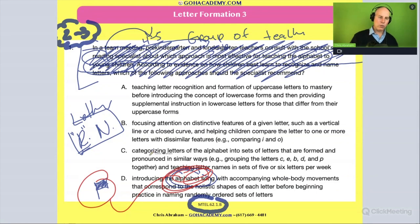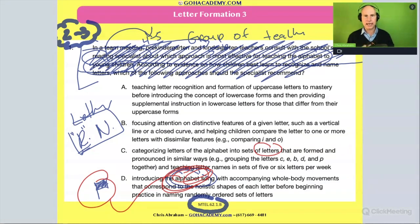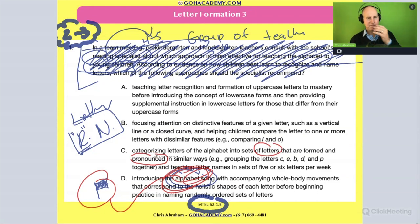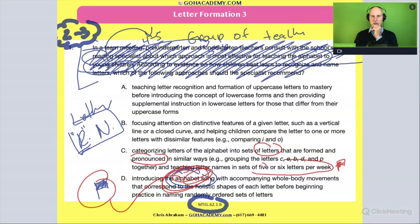Answer B suggests categorizing letters of the alphabet in sets of letters that are formed and pronounced in similar ways. I like that — organizing by how they're formed, with curves and straight lines — that seems very similar to what I described. But here's the red flag: teaching letter names in sets of five or six letters a week. Do you see that? Five or six letters a week — red flag.